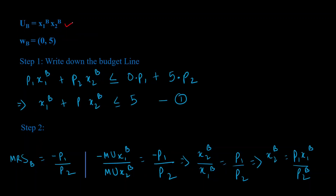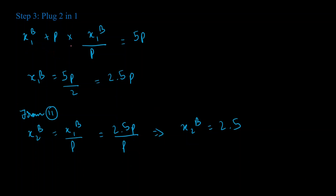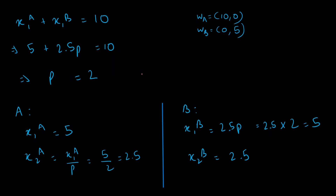We follow the same process for B. B's initial endowment is zero units of good one and five units of good two, so income is 5·p2. Writing the budget constraint and normalizing by p1 gives: x1b + p·x2b ≤ 5p (where p = p2/p1). Setting the MRS equal to the price ratio gives x2b = x1b/p. Substituting back, the p's cancel and we get x1b = 2.5p and x2b = 2.5.